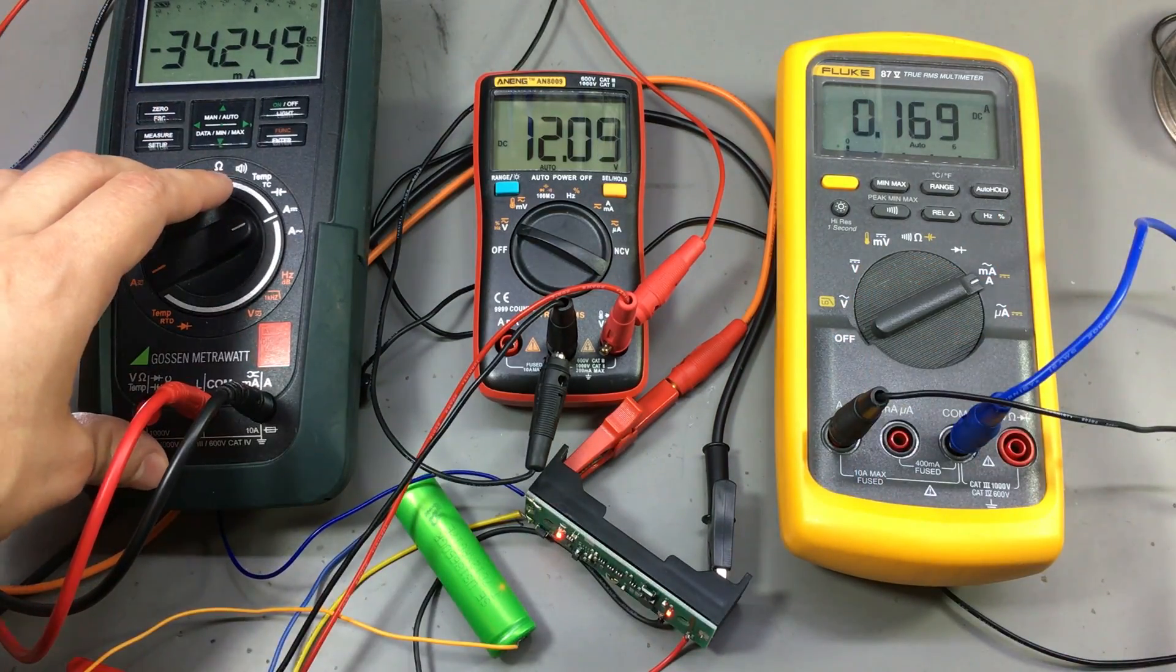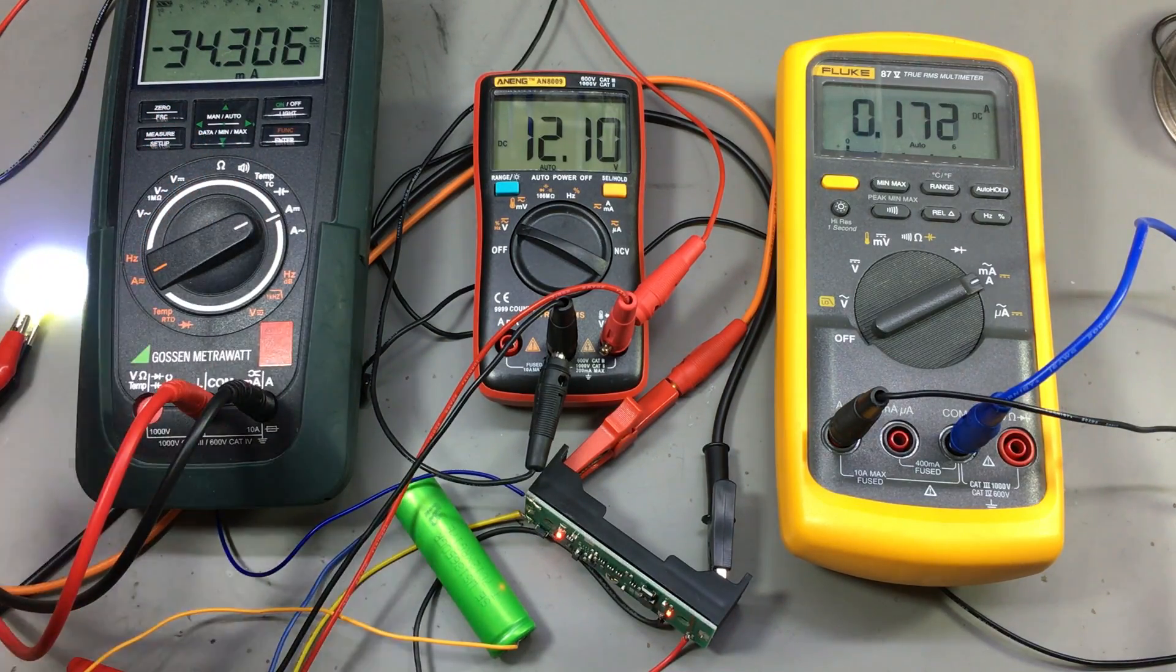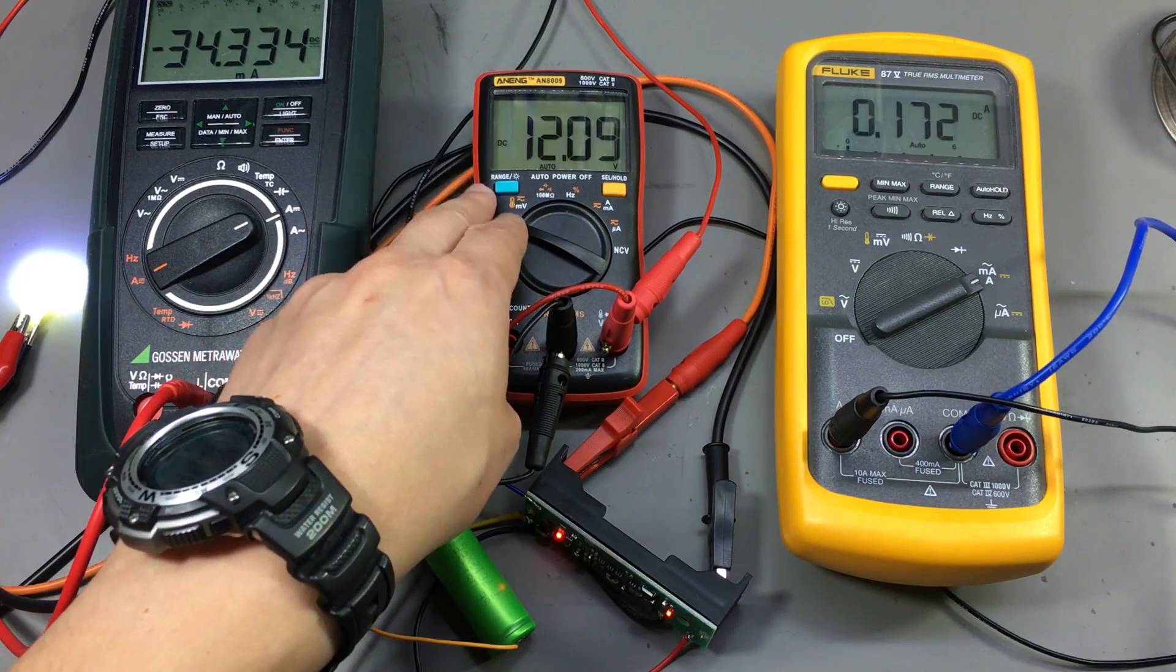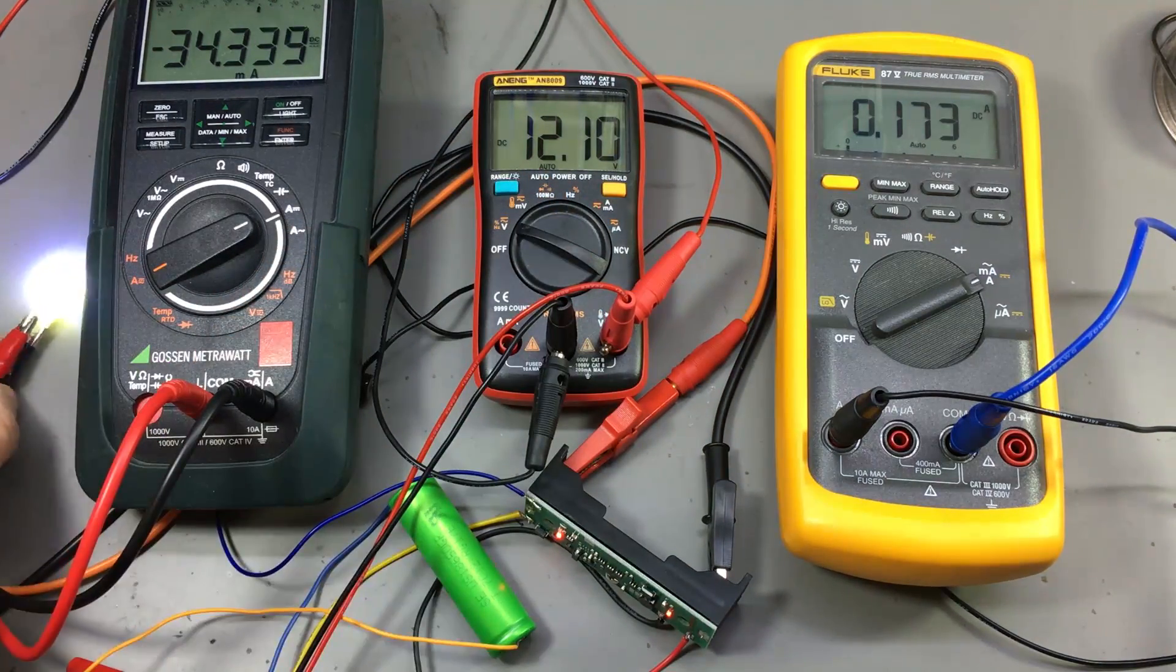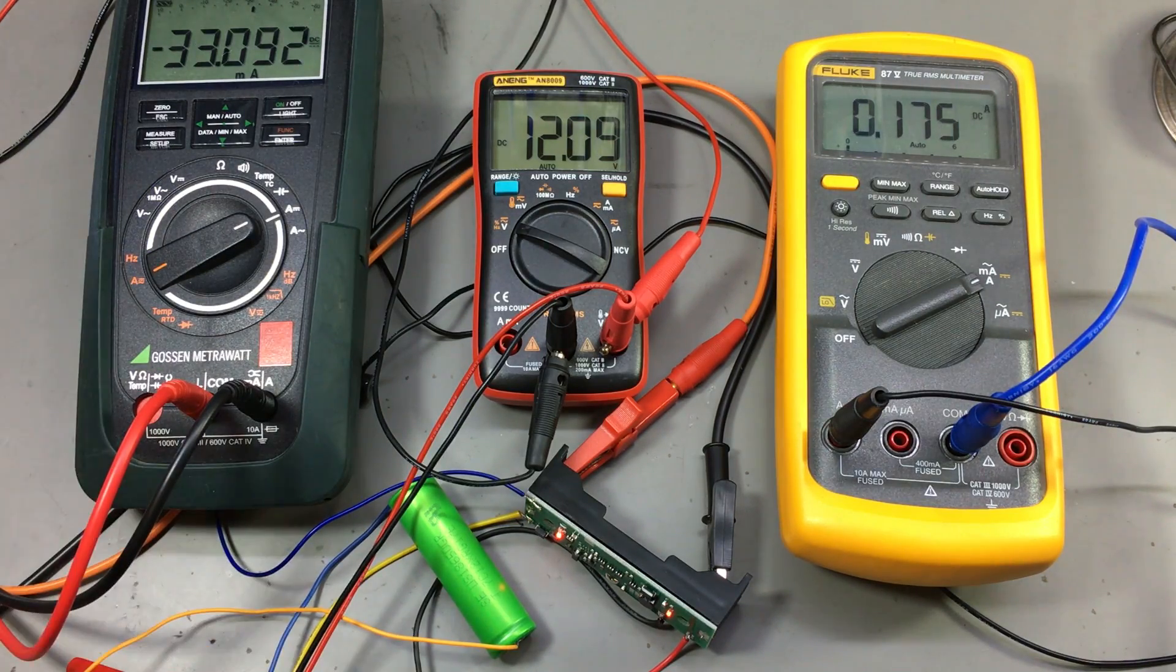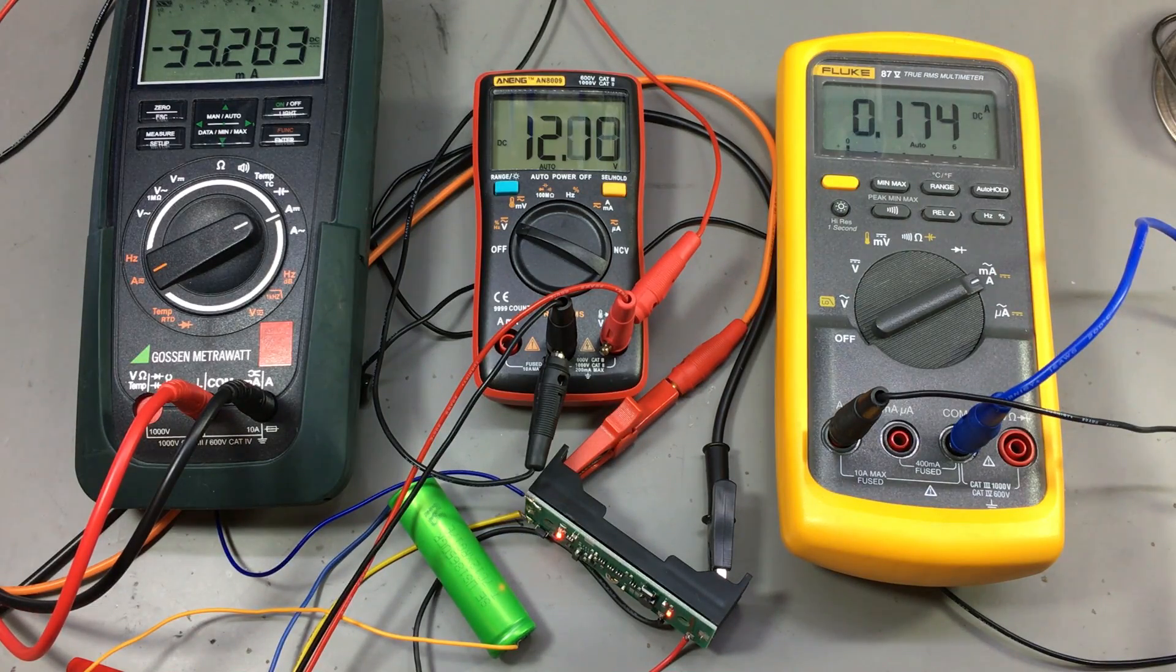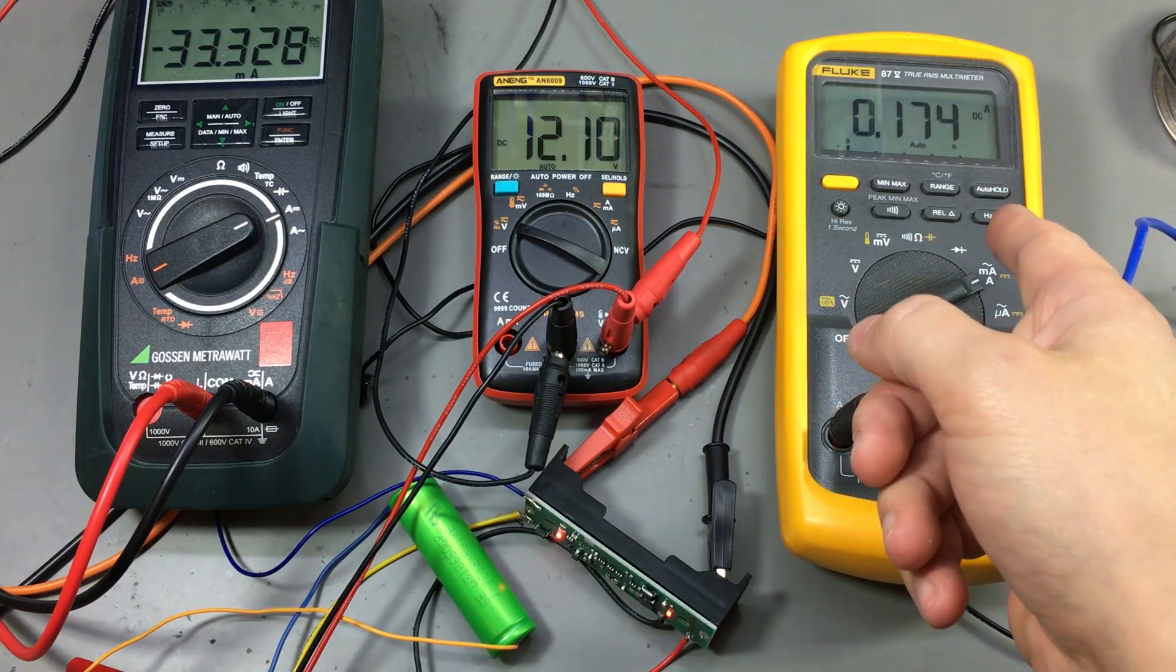The Fluke 87 is in series with the external input, the 5V coming from the bench power supply, measuring the current. And the Goson Metrahit is in series with the battery, measuring the current flowing into or out of the battery. The Aneng is just connected on the output showing the 12V rail of the UPS module. And I have this 12V LED acting as a load on the output to create something like a 200mA load on the 12V output.